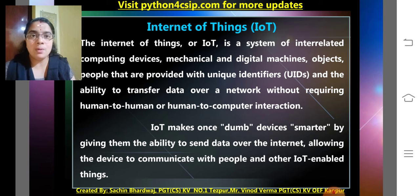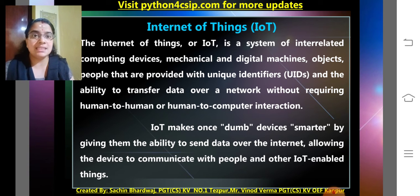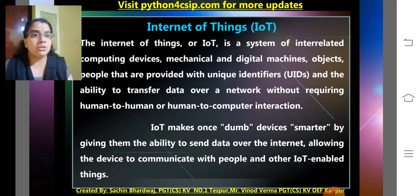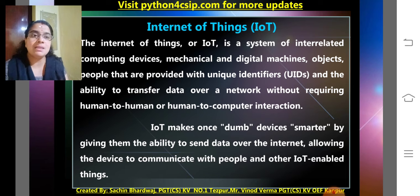IoT is a common term nowadays we are all using. The Internet of Things, or IoT, is a system of interrelated computing devices, mechanical and digital machines, and objects that are provided with unique identifiers, and the ability to transfer data over a network without requiring human-to-human or human-to-computer interactions. IoT makes dumb devices smarter by giving them the ability to send data over the Internet, allowing devices to communicate with people and other IoT-enabled things.